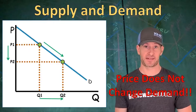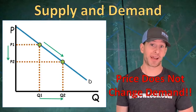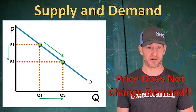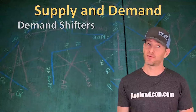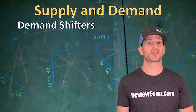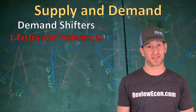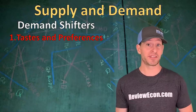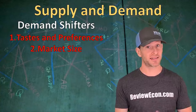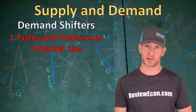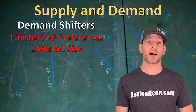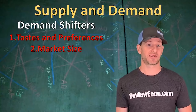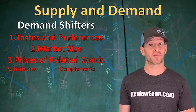A change in demand is a shift of the demand curve. What will shift it? First, consumer tastes and preferences — if something is popular it increases demand, if not it decreases demand. Next is market size, the number of buyers available. An increase in buyers increases demand; a decrease reduces it. Then we have prices of related goods: for substitutes like honey and jam, an increase in the price of one increases demand for the other.